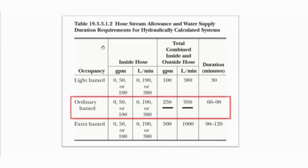As per NFPA 13, hose stream allowance must be added to the sprinkler system demand. This table, extracted from NFPA 13, shows the total combined inside and outside hose allowance based on occupancy hazard. For light hazard, the total combined hose shall be 100 gpm added to the sprinkler demand. For ordinary hazard, 250 gpm must be added to the sprinkler system demand.